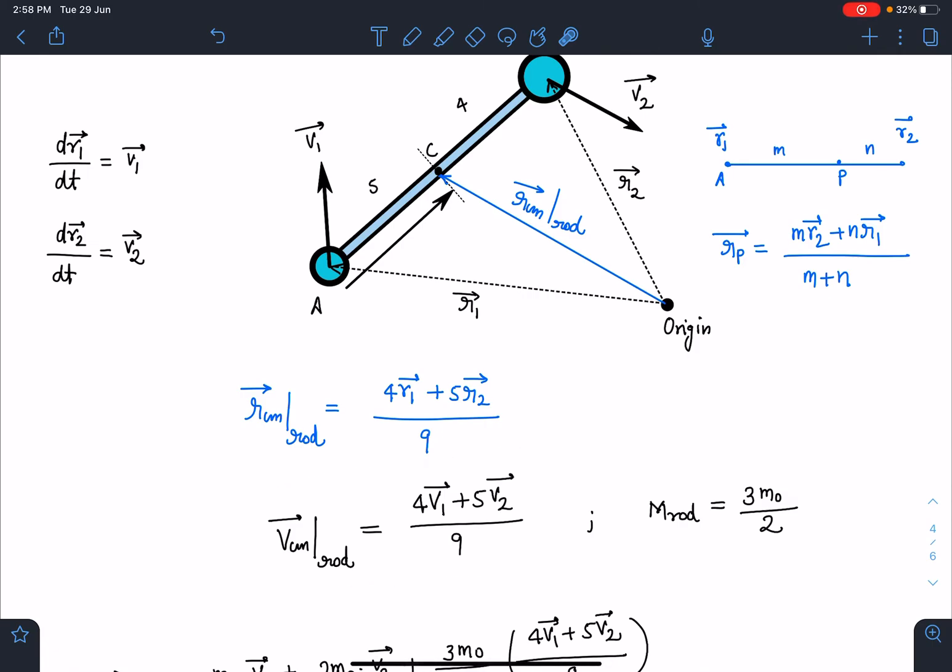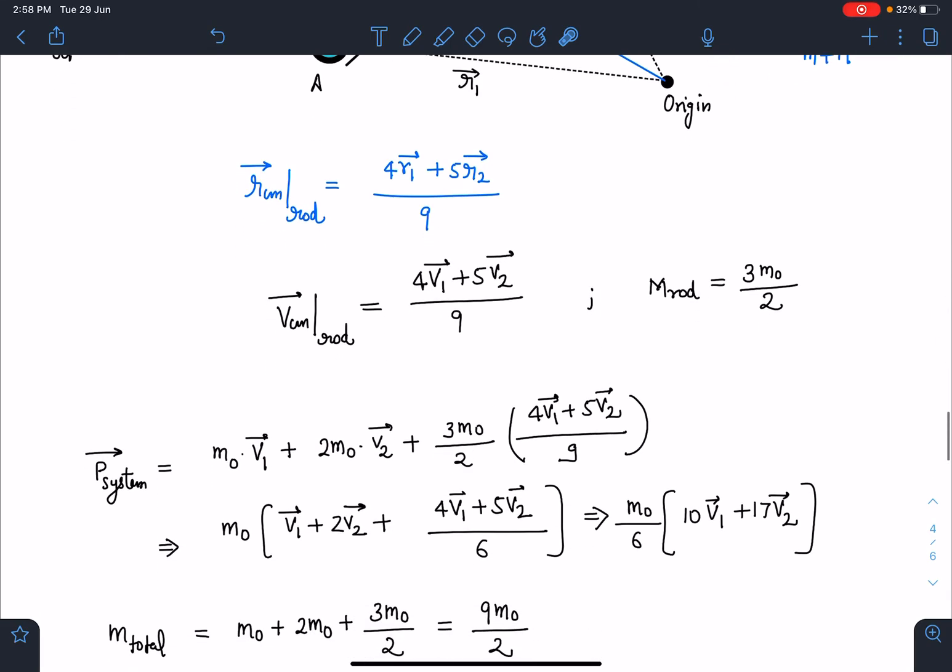It comes as 4V1 plus 5V2 by 9 and mass of the rod is 3M0 by 2. Now, this problem is very simple. I can use total momentum of the system as M1V1 plus M2V2 plus M3V3 of center of mass. Everywhere when we are using M1V1 plus M2V2 plus M3V3, these are the velocity of center of masses of individual parts. Here luckily, particle A and B are point masses so directly we can write for it.